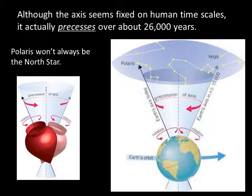Earth is not a perfect sphere and it's being tugged on gravitationally by the sun and the moon. This causes the wobble, and it takes a long time to make one wobble — over 26,000 years. It means our axis gradually points to different parts of the sky.